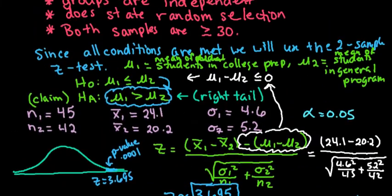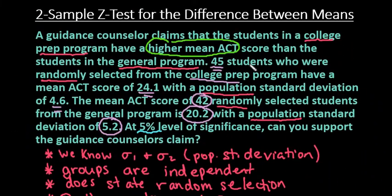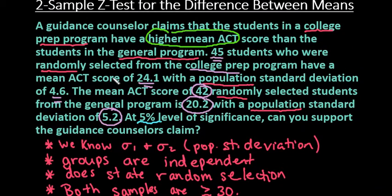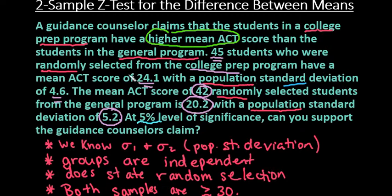To recap: always start with conditions. The biggest distinction is whether you're dealing with means or proportions — that determines whether you use a two-sample Z test or a two-proportion Z test. If you have two samples for the mean, use two-sample Z or two-sample T, and the difference between those is what type of standard deviation you have. Thanks for watching — if you have any questions or need additional topics covered, please let me know.